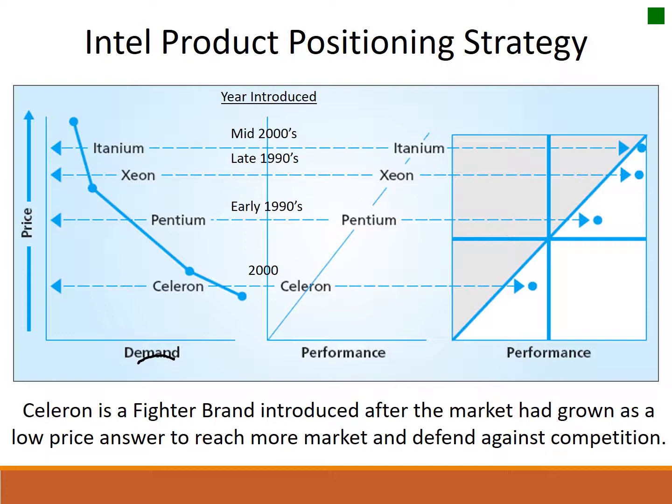Looking at Intel processors over this 15 or so years of time, there are four different products that are offered: the Itanium, the Xeon, the Pentium processor, and the Celeron.